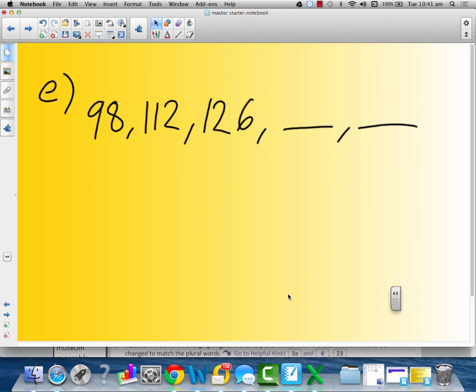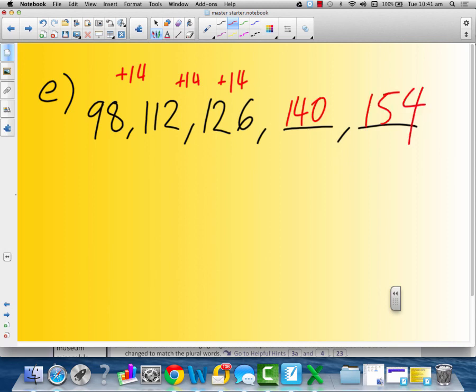Okay. I hope you paused me. E is going up by 14. Plus 14 every time. Plus 14. So 126 plus 14 is 140. 140 plus 14 is 154. Have a go at F for me. This will be a nice tricky one for you to win on. Have a go at F.